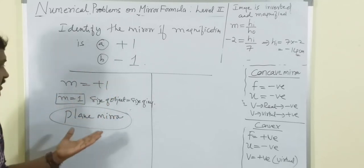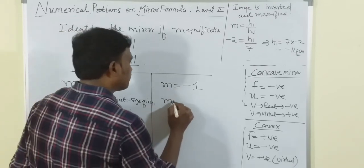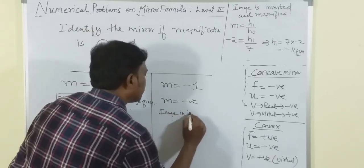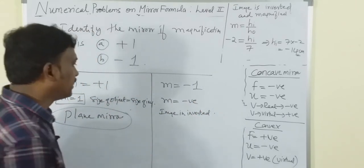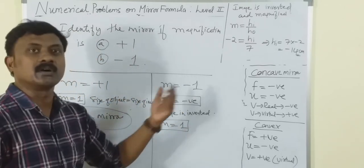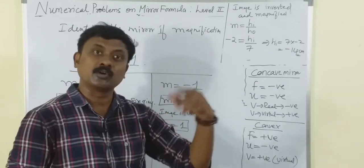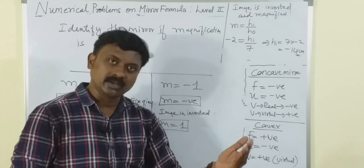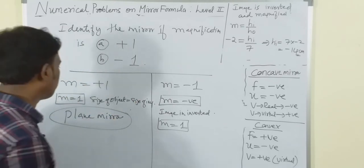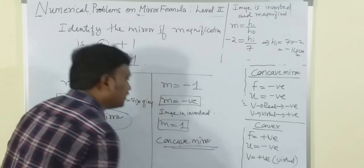When m = -1: m is negative so the image is inverted, and the magnitude equals 1 so the size of image equals size of object. This is the case of a concave mirror when the object is placed at C. We never get this condition with a convex mirror. So m = +1 indicates a plane mirror, and m = -1 indicates a concave mirror with object placed at C.